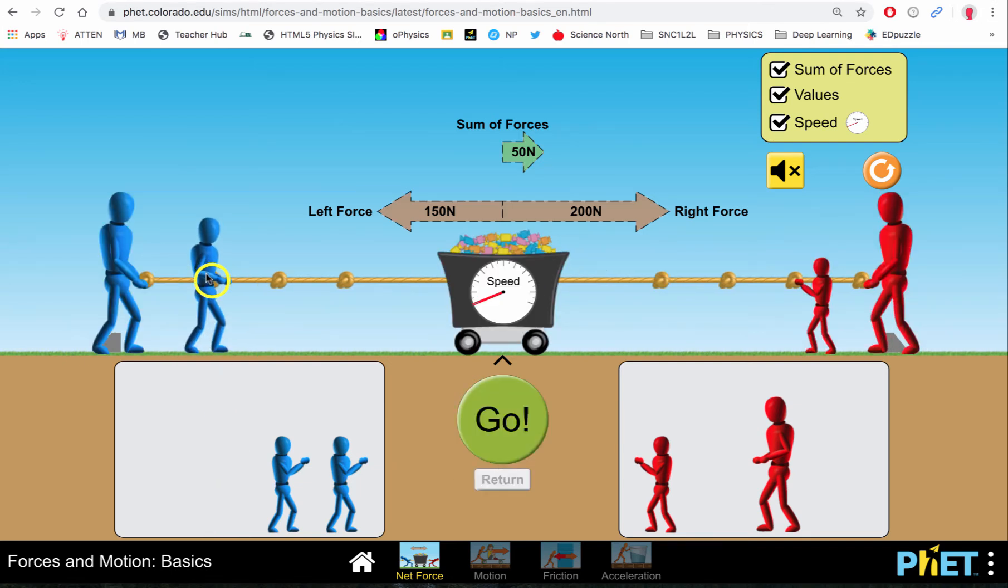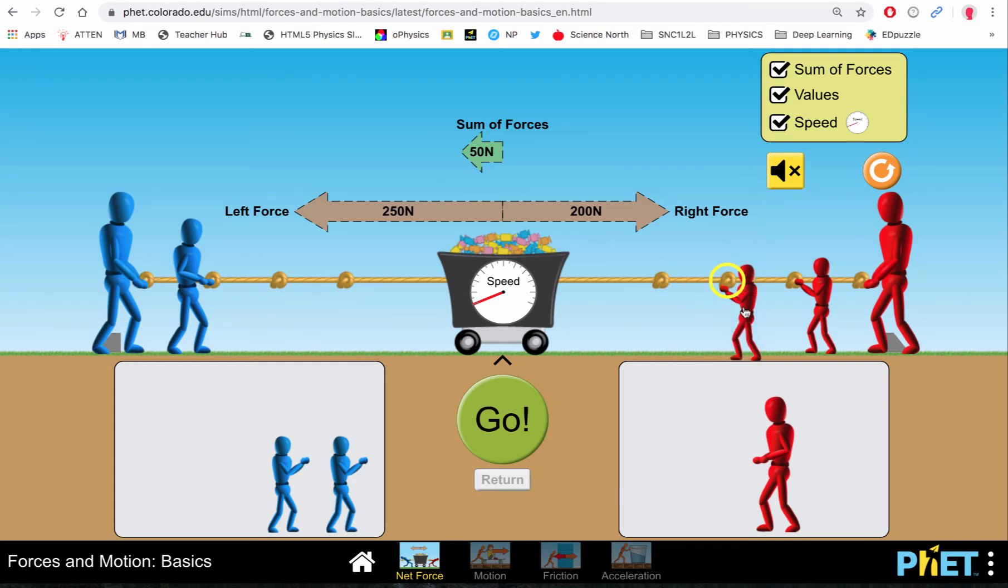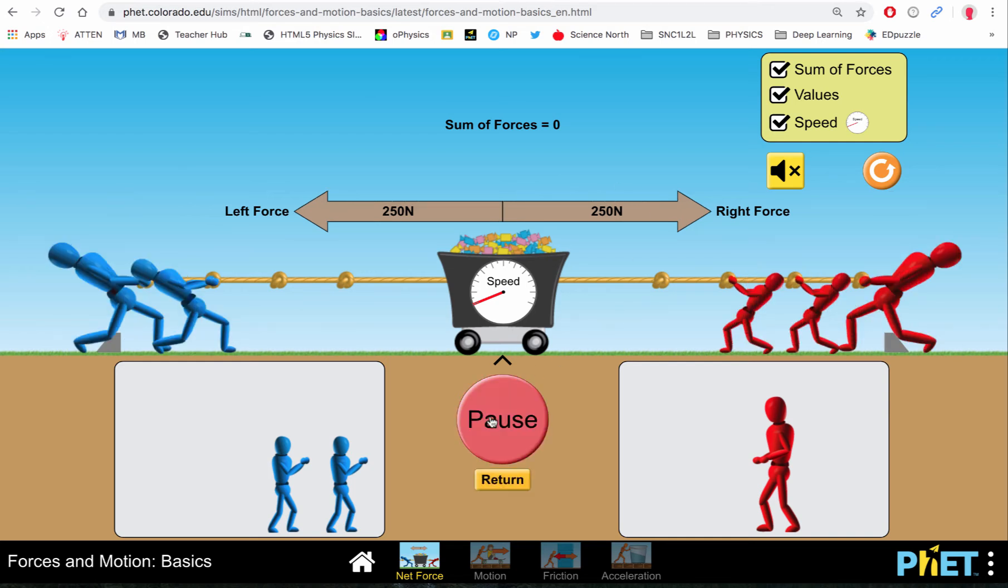So now if we go back and add an extra person on this side, now we've got an extra 50 Newtons towards the left. Put another person here, it's balanced once again. We should have zero speed, zero acceleration, zero sum of forces.